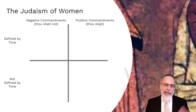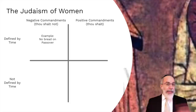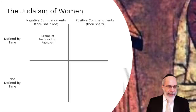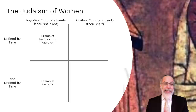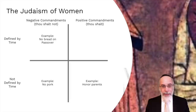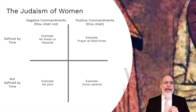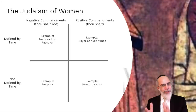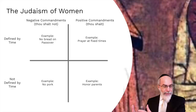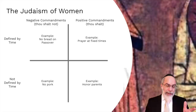A negative commandment defined by time: no eating bread on Passover — you can eat bread many other times during the year, but not during that week. A negative commandment not defined by time: no pork, always applicable. A positive commandment not defined by time: honor your parents — there's no time when this is no longer applicable. A positive commandment defined by time: the prayers of Judaism, which are recited in fixed windows — morning, or Shacharit; afternoon, or Mincha; and evening, or Ma'ariv. So this is one way to categorize the commandments: negative versus positive, and defined by time versus not.